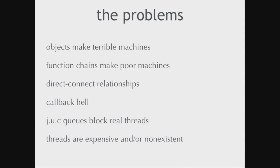The problem is that the implementations of queues that we have are pretty coupled to threads. In particular, a lot of people write code that runs on the JVM, and the java.util.concurrent queues, as awesome as they are, block real threads. And it's trendy, and for good reason, not to consume real threads. So we'd like to have some way to do things that doesn't involve consuming threads. Threads kind of suck even whether they're good or bad. When threads are good, they're expensive, and you don't want to use them. And when threads are bad or non-existent, you can't use them.